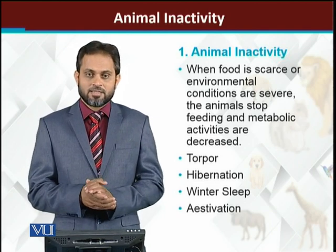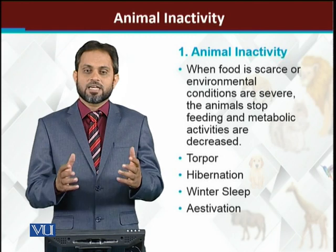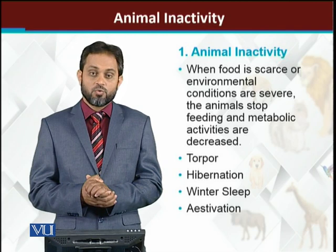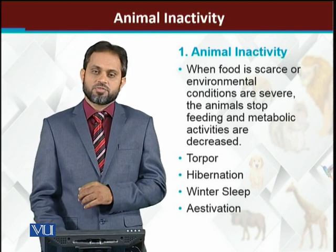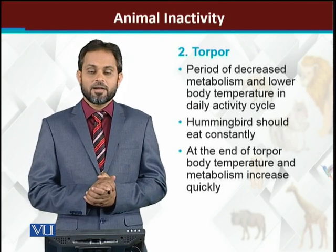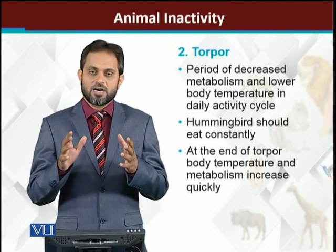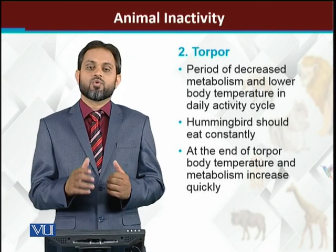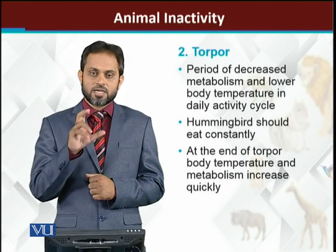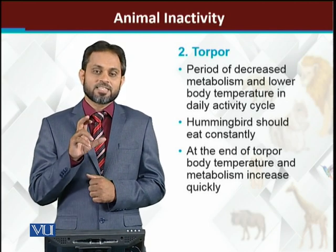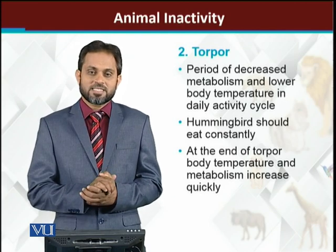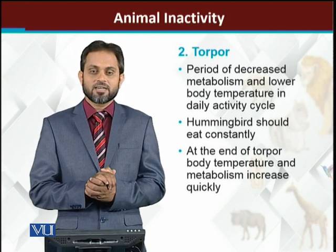There are different types of animal inactivity: torpor, hibernation, winter sleep, and estivation. The first is torpor. Torpor is the inactivity period of some animals within a 24-hour cycle — if the animal is inactive during some part of that 24-hour period, we say it is in torpor. The best example is the hummingbird.